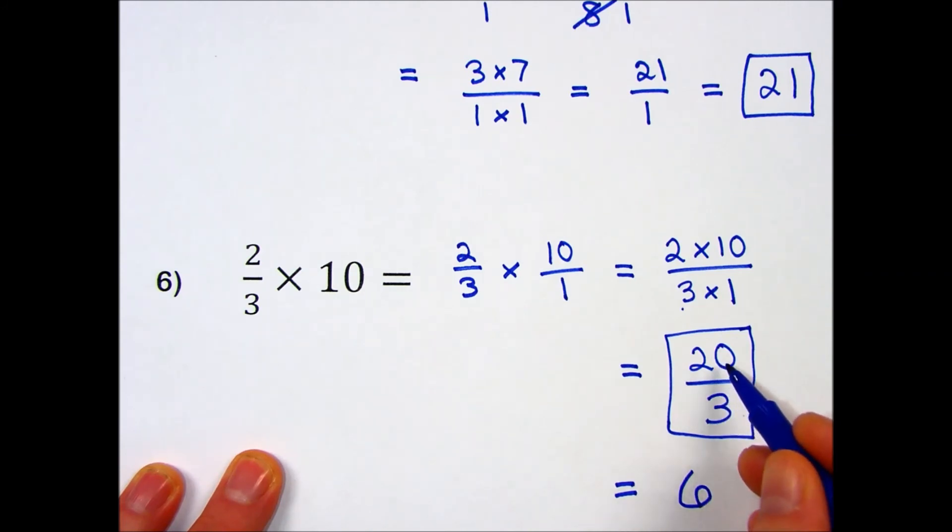3 times 6 is 18, and there's 2 left over—2/3rds. 6 and 2/3 would be this answer in a mixed number format.